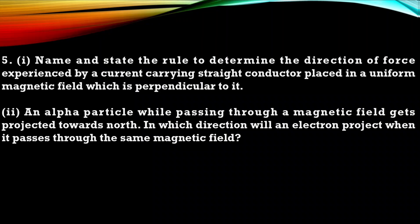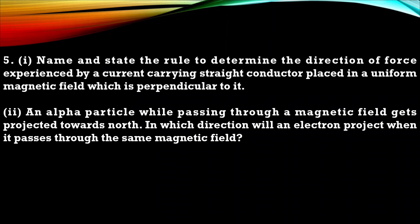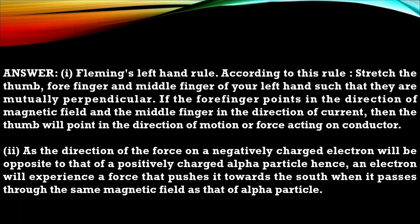Next question 5. 1. Name and state the rule to determine the direction of force experienced by a current carrying straight conductor placed in a uniform magnetic field which is perpendicular to it. 2. An alpha particle while passing through a magnetic field gets projected toward north. In which direction will an electron project when it passes through the same magnetic field? So here is the answer for fifth question. You can add the diagram of Fleming left hand rule as well if you are good in drawing.